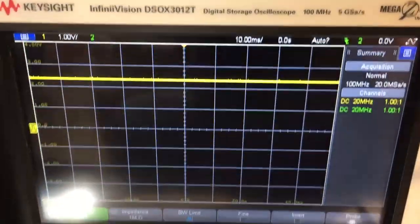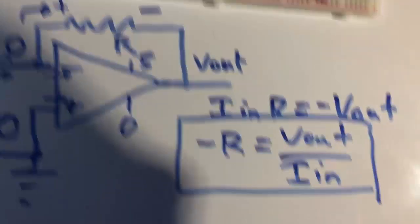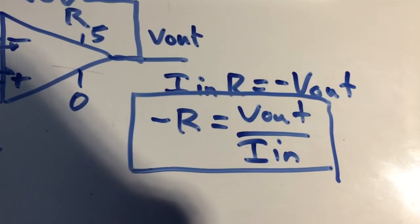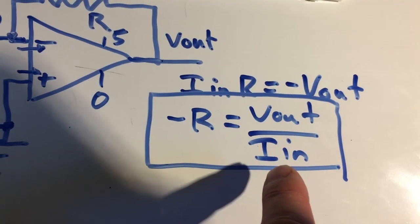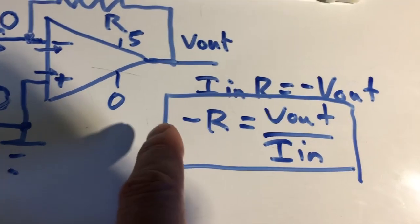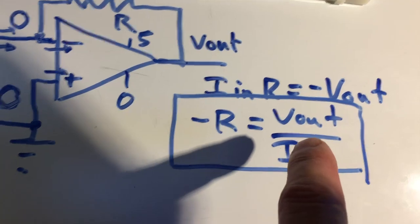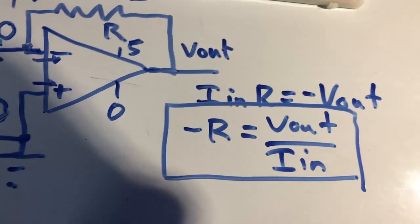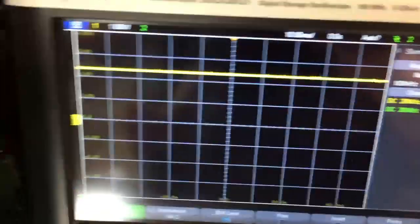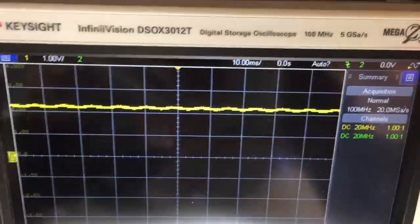You could see that our current's going in, and if we flip this up here, so Iin times negative R equals Vout. So the voltage is going to go down for an increase in current or increase in light intensity, and it actually does.